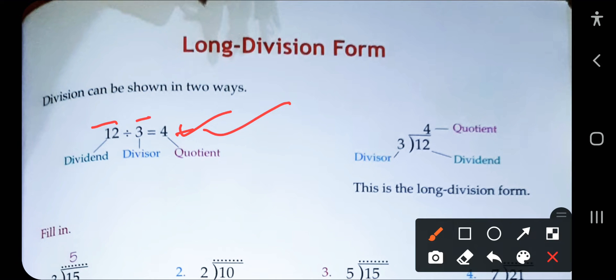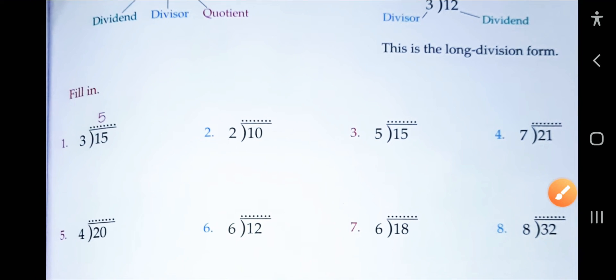Again we are dividing the same question by another method. We have drawn a picture and written the dividend in the middle. Now we are dividing by three — divisor is three — and we count the table of three. It will be divided four times, so the quotient will be four.